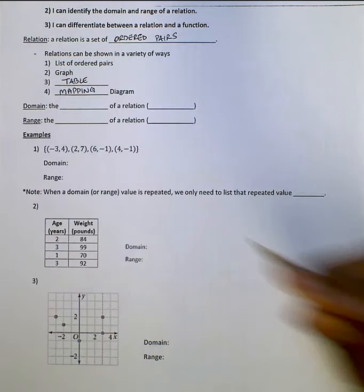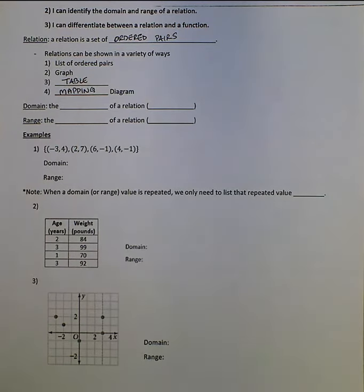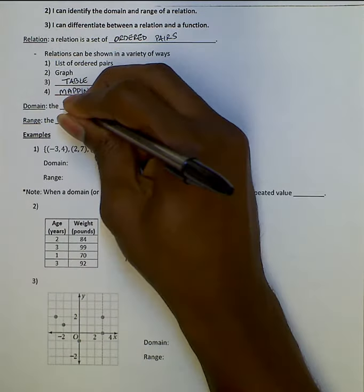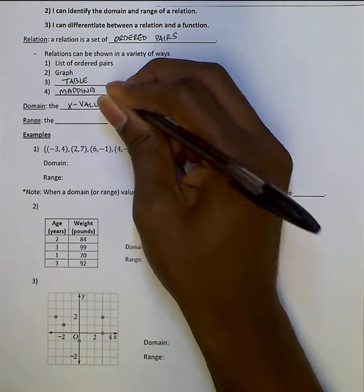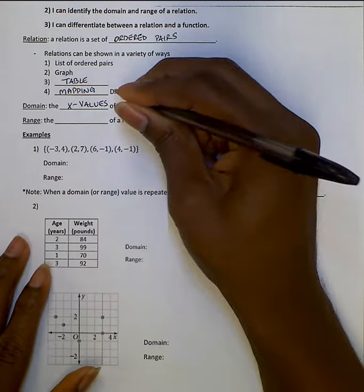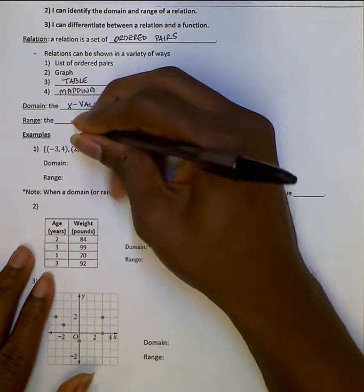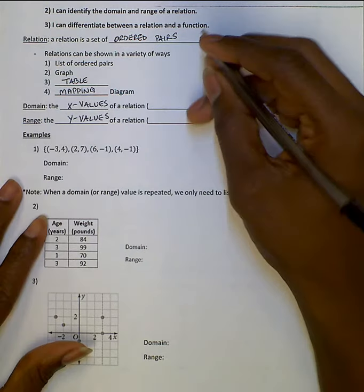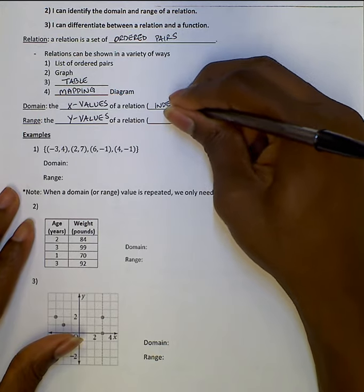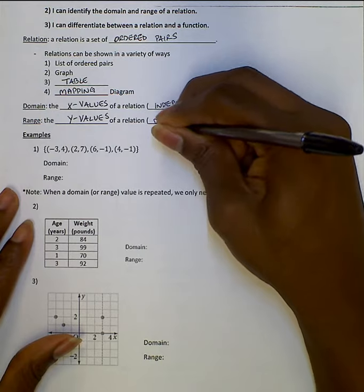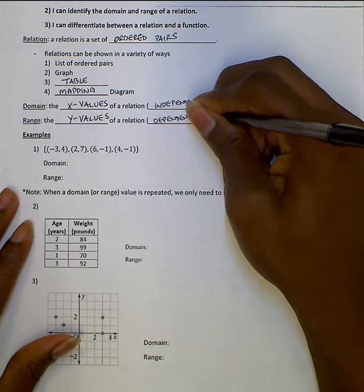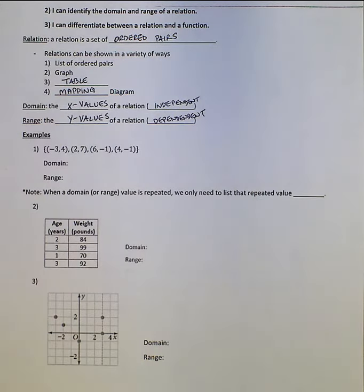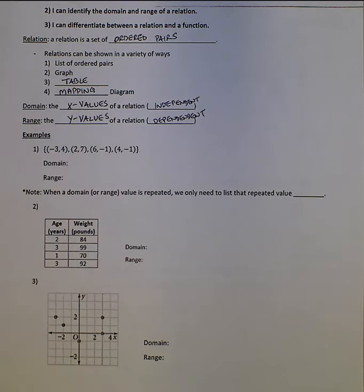The first three you should be pretty familiar with; the last one we'll look at in these notes as well. The domain is the x-values of a relation. The range is the y-values. You can say independent and dependent if you'd like. Independent for the x-values because you choose those typically, and dependent for the y-values because they're kind of at the whim of x — whatever x is changes y. We'll see that as we get into functions.